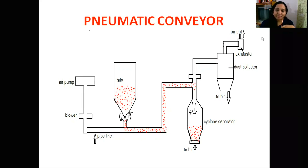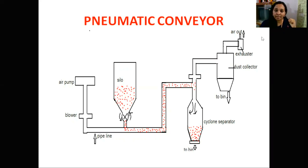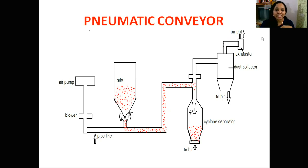Hello everyone! This is a chapter of Material Handling System. We have three conveyors: Belt Conveyors, Screw Conveyors, and Pneumatic Conveyors. We are going to talk about Pneumatic Conveyors.